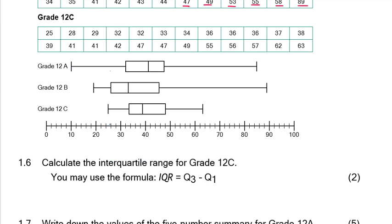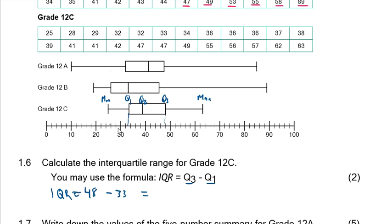Question 1.6: Calculate the interquartile range for 12c. The interquartile range is Q3 minus Q1. For Q3, going down the number line, it's at 48. For Q1, going down the number line, it's between 32 and 34, so it's 33. Therefore, 48 minus 33 gives an interquartile range of 15.